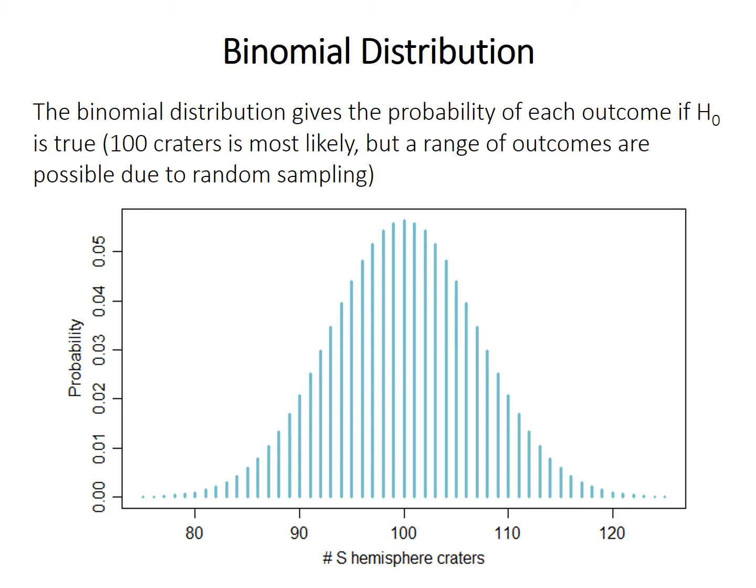That formula lets us generate a discrete probability distribution called the binomial distribution, shown here. It has a bell shape like the normal distribution, but it's discrete — it can only take whole number values. There's no such thing as the probability of finding 109.5 craters. The binomial distribution gives the probability of each outcome if the null hypothesis is true. With 200 craters and an expected probability of 0.5, the most likely outcome is 100 craters, and the distribution tells us the range of outcomes we might expect.